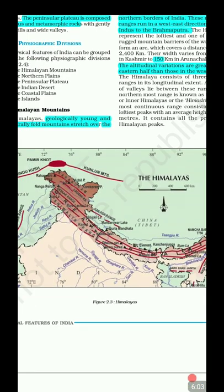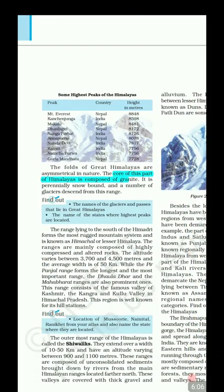The folds of the Great Himalayas (Himadri) are asymmetric, and the core is made of granite — this granite base is what pushes the Himadri so high. The other ranges, like Himachal (Lesser Himalayas), have highly compressed rocks, while the Shivaliks have unconsolidated sediments.